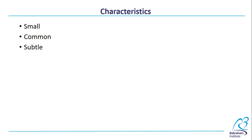Microaggressions are subtle. That ambiguity can make them hard for the person experiencing them to put their finger on why exactly they feel harmed by them, and it can make the perpetrator completely unaware of the fact that they've said something harmful. Unintentional — though it's very common for microaggressions to be unintentional, sometimes they aren't. Harmful — repeated exposure to microaggressions can lead to lowered performance, lack of confidence, anxiety, and depression. So they really do have strong negative effects.